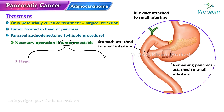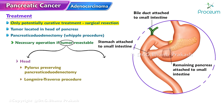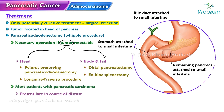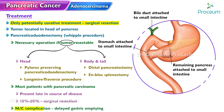For tumors of the head of the pancreas, a pylorus-preserving pancreaticoduodenectomy (Longmire-Traverso procedure) is preferred. For tumors of the body and tail of the pancreas, distal pancreatectomy and en-bloc splenectomy is preferred. However, most patients present late in the course of the disease, making only 15 to 20% of patients candidates for surgical resection. The most common complication of pancreaticoduodenectomy is delayed gastric emptying.